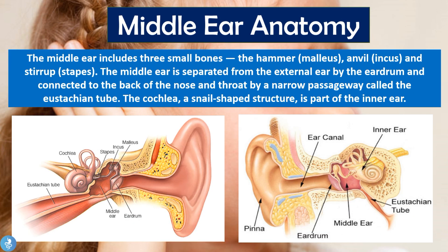Before we get into the specifics of the otitis media infection itself, let's take a closer look at the middle ear anatomy. The middle ear includes three small bones: the hammer, also known as the malleus; the anvil, also commonly known as the incus; and the stirrup, also commonly known as the stapes. If we take a closer look at this image we can see what these three little bones look like — the malleus, then the incus, and finally the stapes, which is more towards the inner ear.